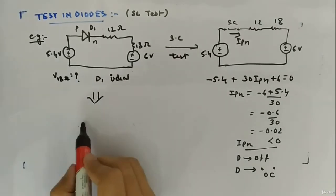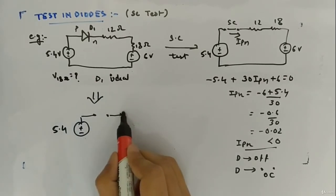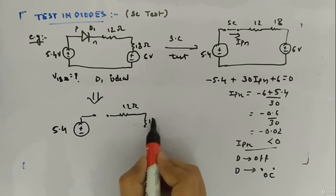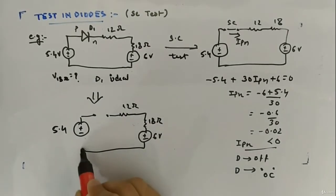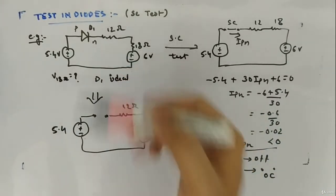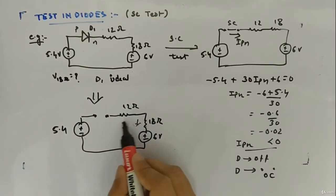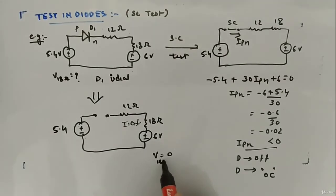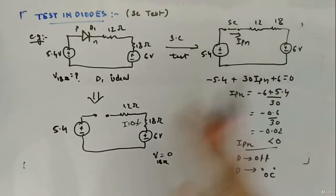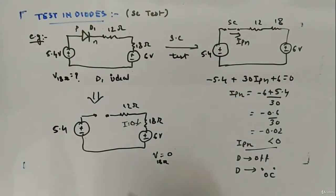Since I_PN is less than 0, the diode is off and will be replaced by an open circuit in the equivalent circuit. So the equivalent circuit becomes: 5.4-volt source, 12-ohm, 18-ohm, 6-volt source, with an open circuit where the diode was. Now there is no current — I = 0 — so the voltage across the 18-ohm resistor is 0 volts. This shows that by testing, you can get a completely different circuit depending on the diode's state.